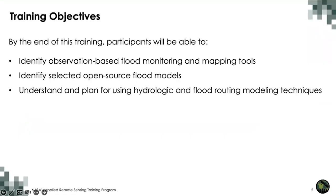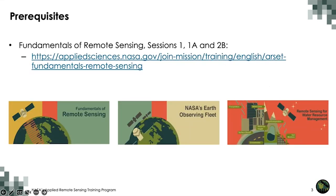The overall training objectives are as follows. By the end of this training, you will be able to identify observation-based flood monitoring and mapping tools, identify selected open source flood models, and understand and plan for using hydrologic and flood routing modeling techniques for your own use. There are several prerequisites — three webinars from RSET providing information about fundamentals of remote sensing, NASA's Earth observing satellites and sensors, and remote sensing for water resources management.